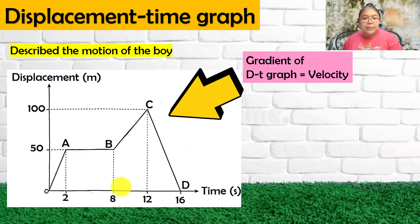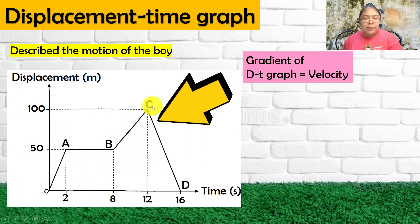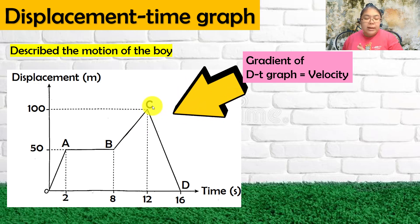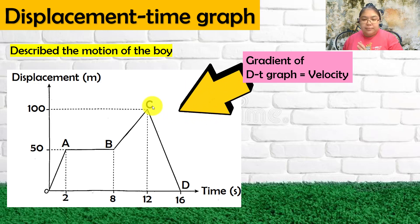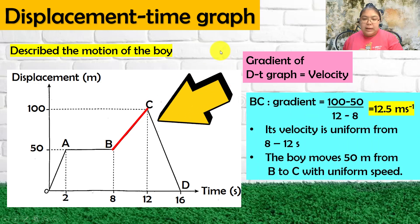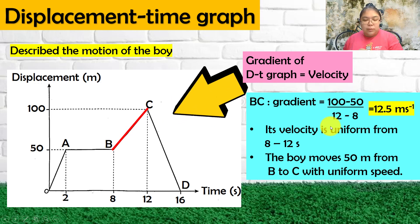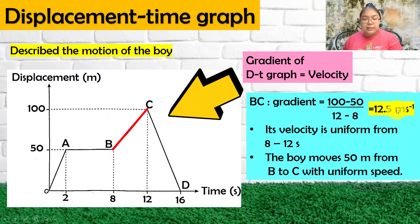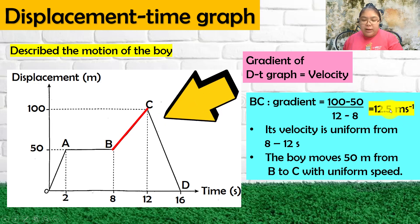Part three, B to C: the line inclines again, going up, which means the boy starts to move again and velocity increases. We calculate the BC gradient as (100 minus 50) divided by (12 minus 8), and the answer is positive — 12.5 m/s.